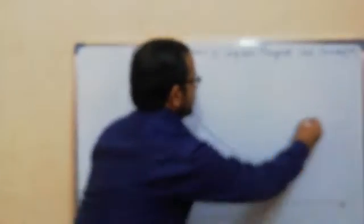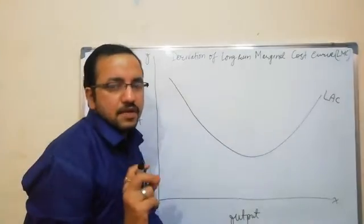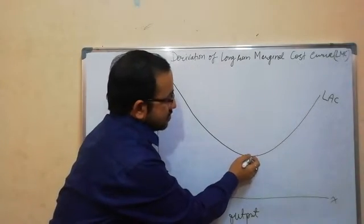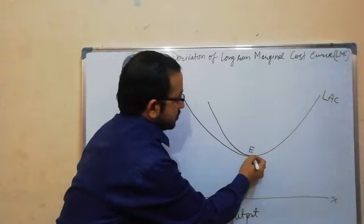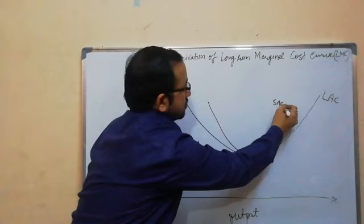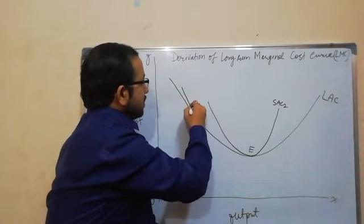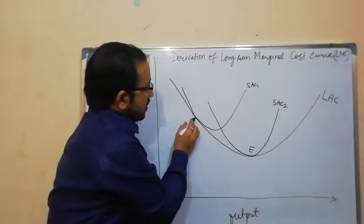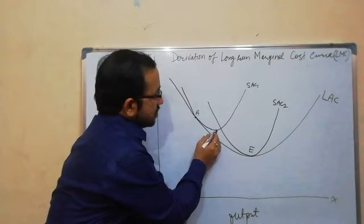Here we have LAC and there are three short-run average cost curves: SAC1, SAC2, and SAC3. SAC2 will be tangent to the LAC at the lowest point of LAC, and the lowest point of LAC is E. So here we will draw SAC2. Now here we will draw SAC1. SAC1 will be tangent to LAC at the falling portion at point A, and the minimum point of SAC1 is P.